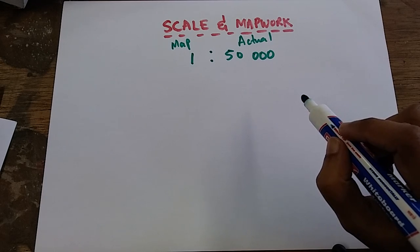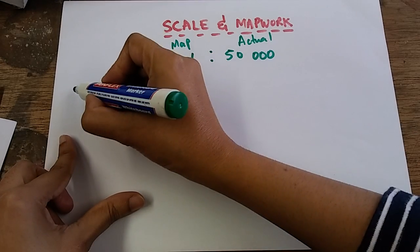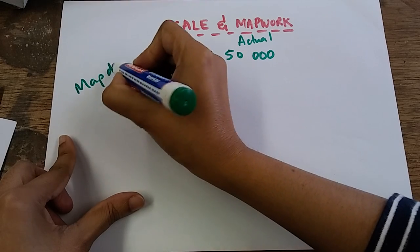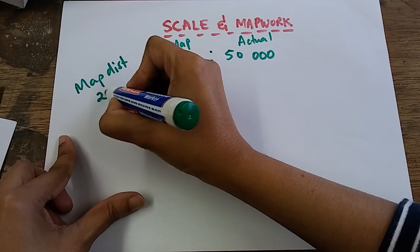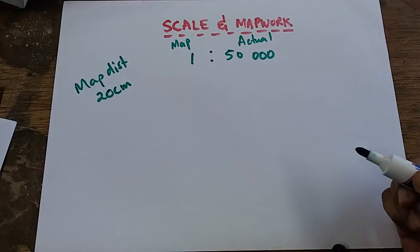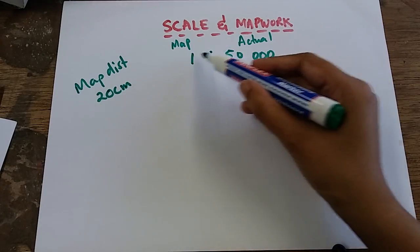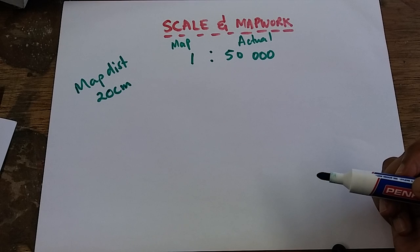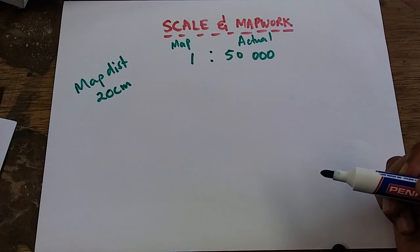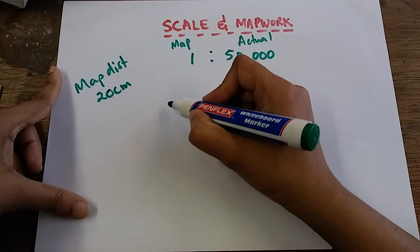So I have my map distance, I have my scale, I am calculating actual distance. Step one: write out your scale, 1 is to 50,000.